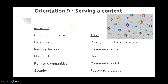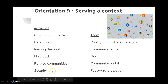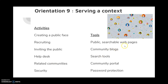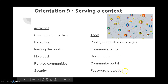Orientation nine is whether the focus of your community is serving a context. If so, you need to create a public face, recruit, have a help desk, and be able to manage security. Some of the tools you'll need are searchable web pages, a community portal, and password protection.